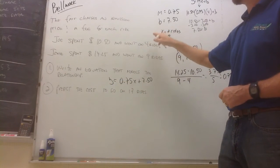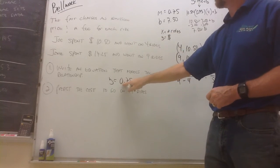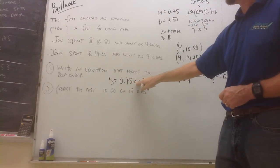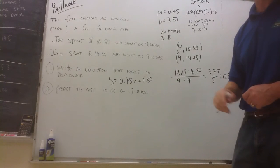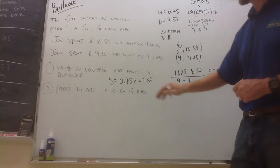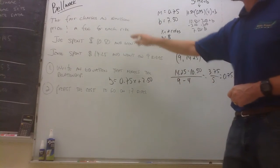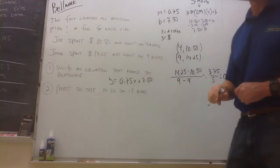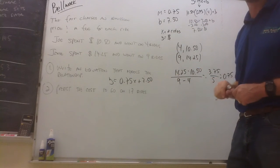The total cost is $0.75 per ride. My slope, remember, is the cost per ride. $0.75 per ride plus $7.50. What does the $7.50, the y-intercept represent? It's going to be your admission price. Remember, you haven't gone on any rides when you paid your $7.50.